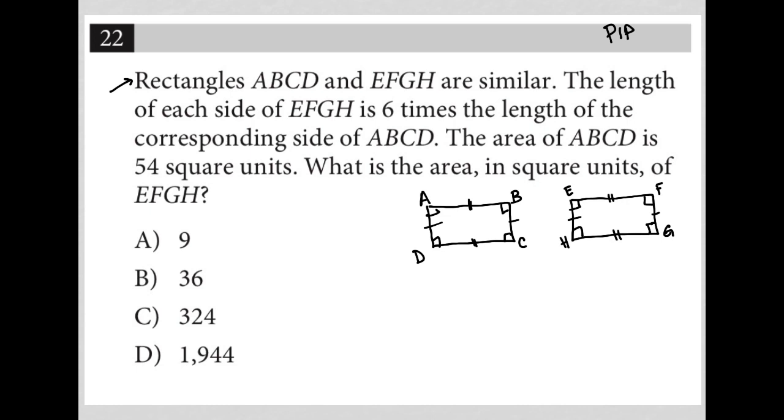Okay, so then if I call this side, the length of the side X, that would make this X as well, but that would make this 6X over here. And if I call this Y, that would make this Y as well, but that would make it 6Y over here.